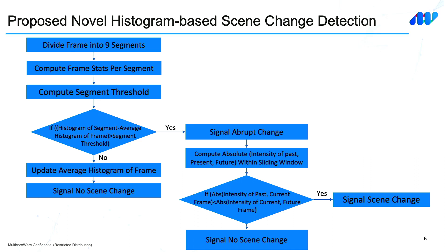This is the flowchart of our proposed solution. The first step is to divide the frame into different segments, and for each segment, compute segment-level statistics like the histogram, variance, and average pixel intensity. We also compute a segment-level threshold that makes use of both luma and chroma variance and the weighted average along with pixel intensity. Once all metrics are ready, we move to decision-making, where we compute the absolute difference between the histogram of the current segment and the average histogram of the frame. If this difference exceeds the segment threshold, it indicates an abrupt scene change; if lesser, there is no scene change, and we update the overall moving average and proceed to the next frame.